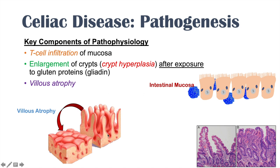The villi are in the intestinal lumen to increase the surface area for absorption of nutrients. If we continually have autoimmune destruction of these villi and microvilli, they get flattened out and we lose that surface area — we lose our ability to absorb nutrients. That is one of the major issues in celiac disease: decreased ability to absorb nutrients from our diet.